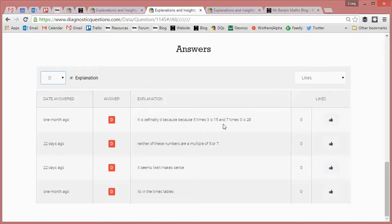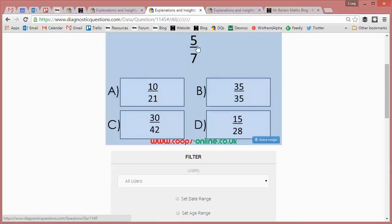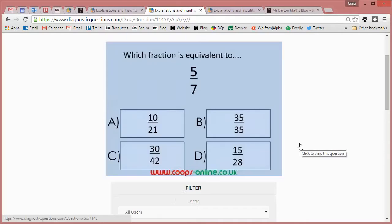Here actually we've got a slightly different misconception, haven't we? That student seems to be aware that they need to be multiplied by the same thing, but he's got an issue with his seven times table. Seven times three is 28, so that's what that particular student is claiming.